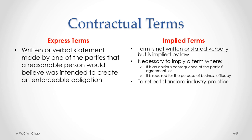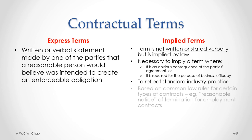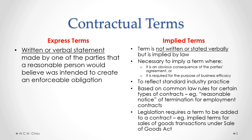Another situation where the law would imply a term is to reflect standard industry practice. Also, based on common law rules for certain types of contracts, terms will be implied. One obvious example is with an employment contract — there is a common law implied term that to terminate an employee, they need to be given reasonable notice. Terms can also be implied by government legislation that identifies specific contracts and requires specific terms to be automatically implied. One example is under the Sale of Goods Act, which requires terms regarding the quality or delivery of items to be automatically implied into sales contracts.